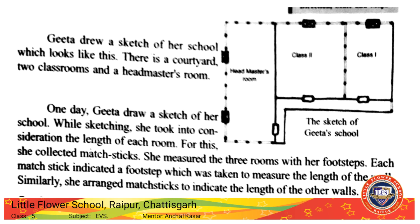Gita drew a sketch of her school. While sketching, she took into consideration the length of each room. She collected matchsticks. She measured Class 1, Class 2, and the headmaster's room with her footsteps. Each matchstick indicated a footstep which was taken to measure the length of the wall. She arranged matchsticks to indicate the length of other walls.